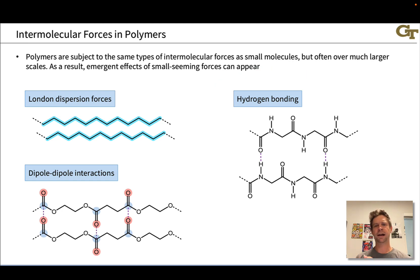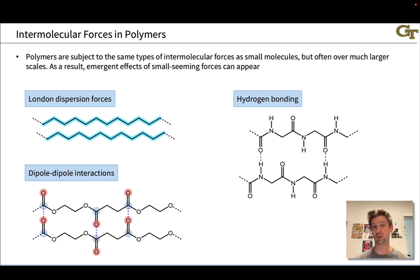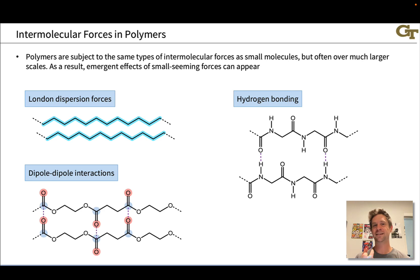An important lesson here is that the effects of intermolecular forces are amplified in polymers because even a polymer backbone of moderate size contains a huge number of these interactions — a huge number of hydrogen bonds in a typical protein, or a huge number of dipole-dipole interactions in a typical polyester. So a subtle change to the nature of a functional group inside a monomer can have huge effects on the material properties of the polymer.